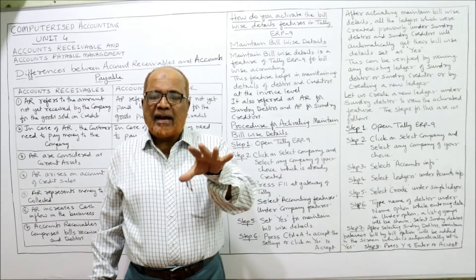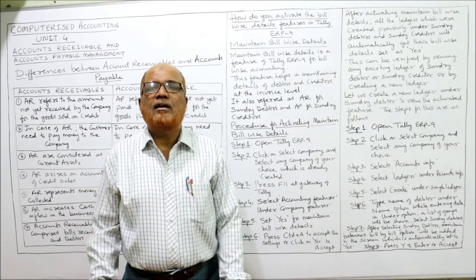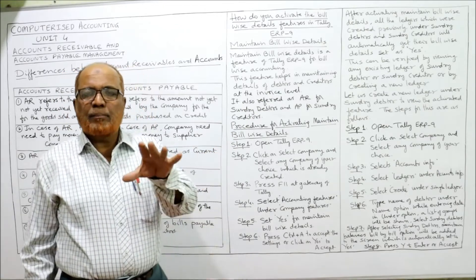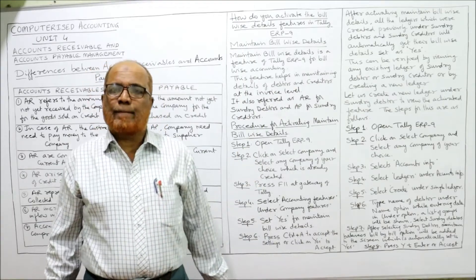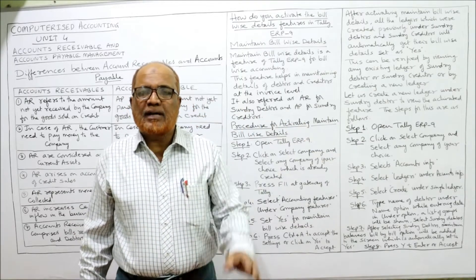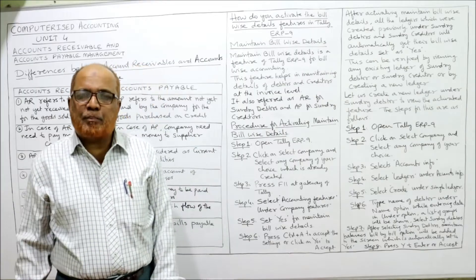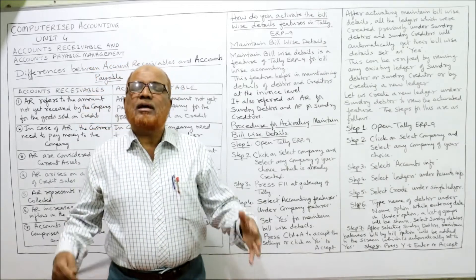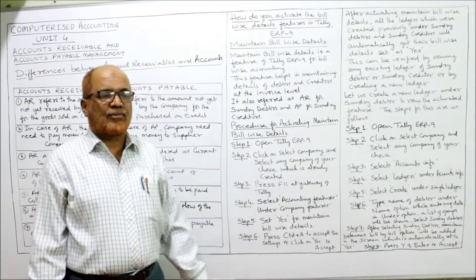A company must keep details of bill-wise sales and bill-wise purchases. The maintain bill-wise details feature in Tally ERP-9 helps the company maintain debtors and creditors at the invoice level — the details of invoices for each customer and supplier. It is also referred to as accounts receivable for sundry debtors and accounts payable for sundry creditors, which is the modern terminology compared to the traditional terms debtors and creditors.